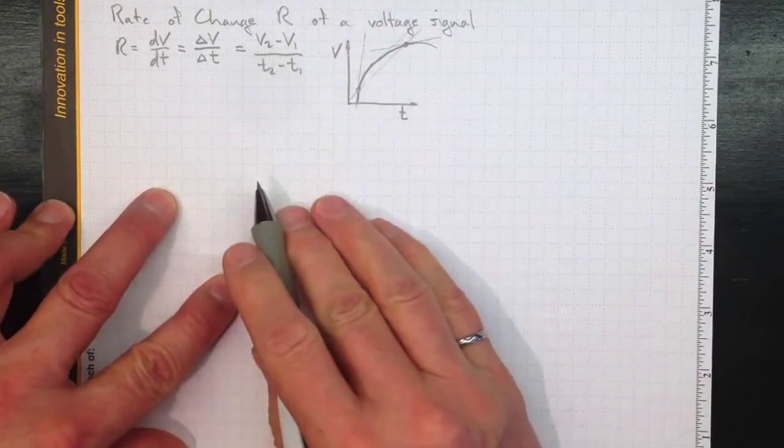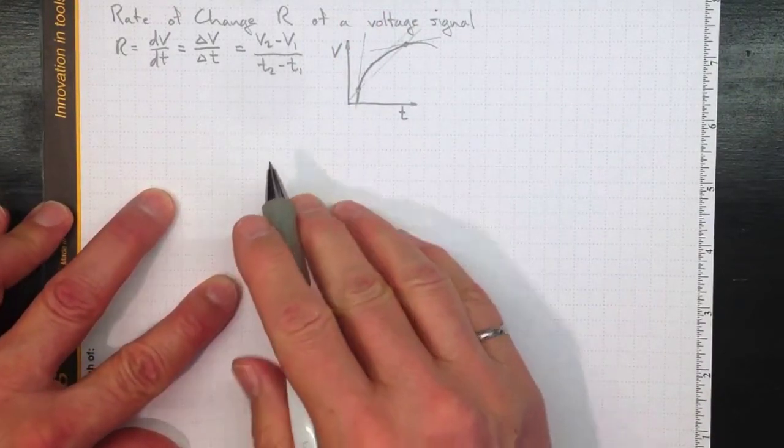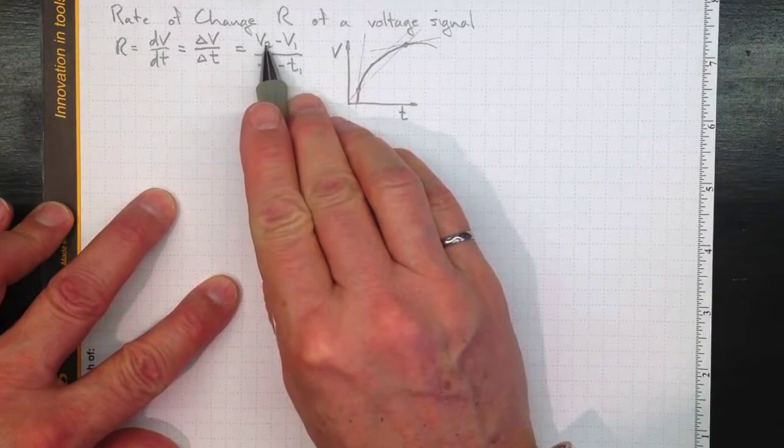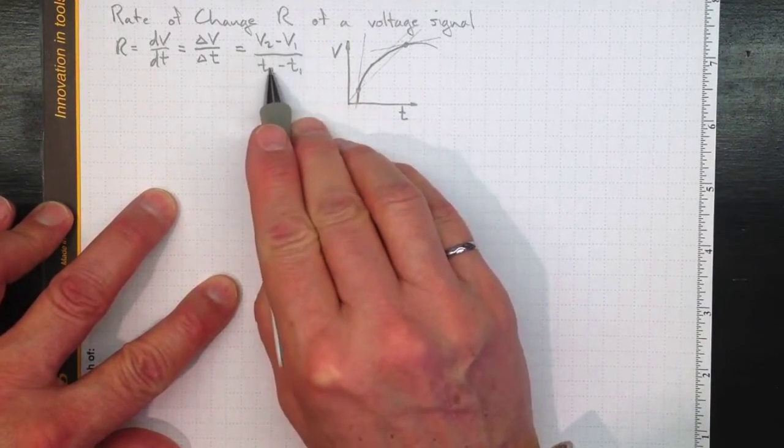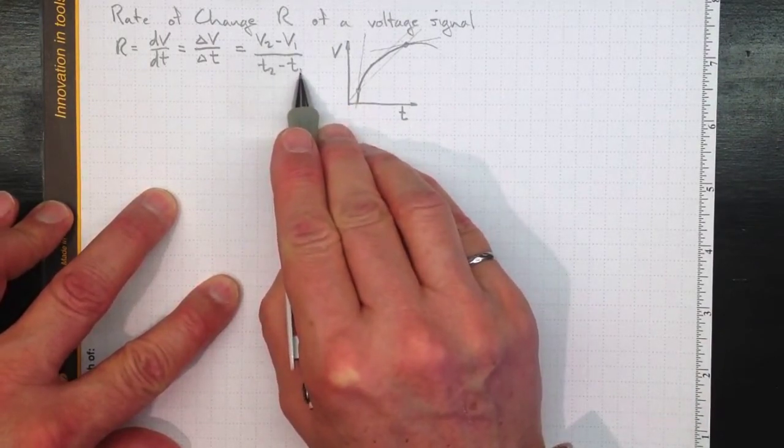Problem is, that introduces some uncertainty because we're not sure about our measurements of either of those voltages and we're not sure exactly what time we took those measurements.